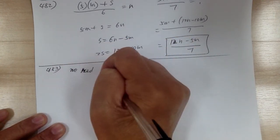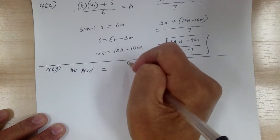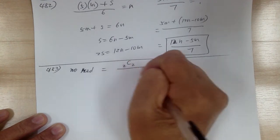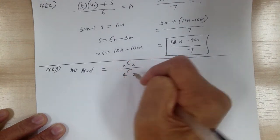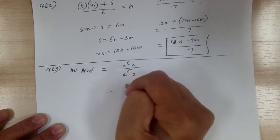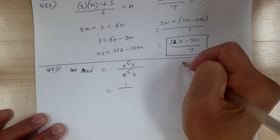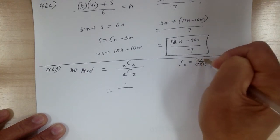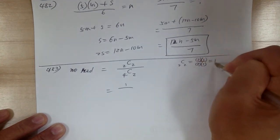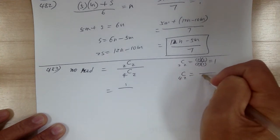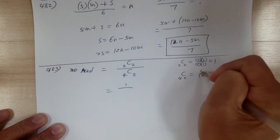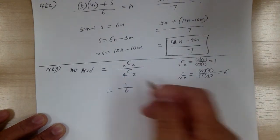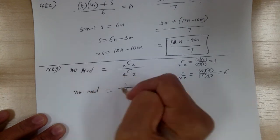Probability of no red equals: there are two black ones and you want to choose both, out of a total of four choosing two. So 2C2 equals 1, and 4C2 equals 6, so no red equals 1 over 6. So the probability you're looking for — at least one red — would be 1 minus 1/6, which equals 5/6.